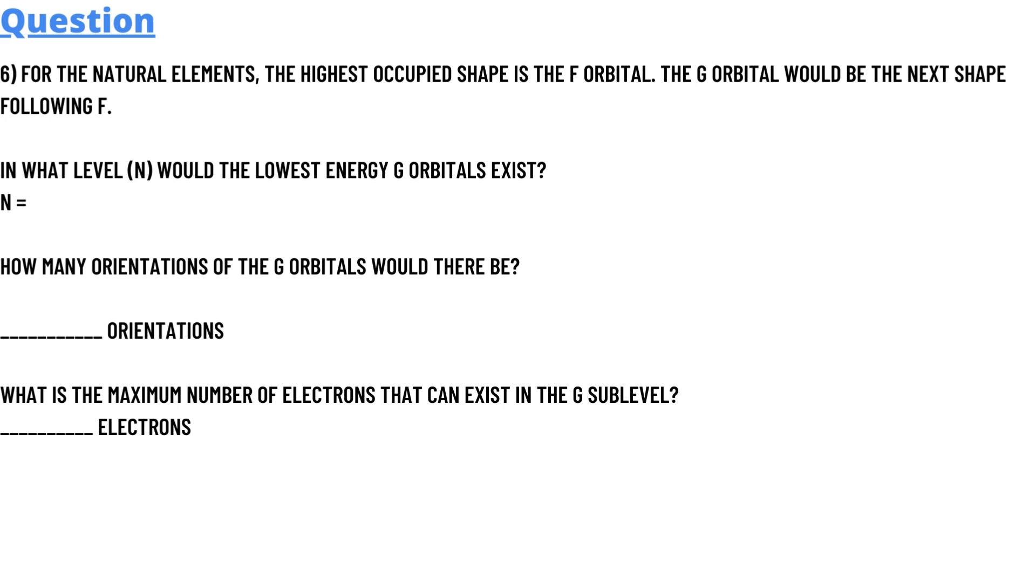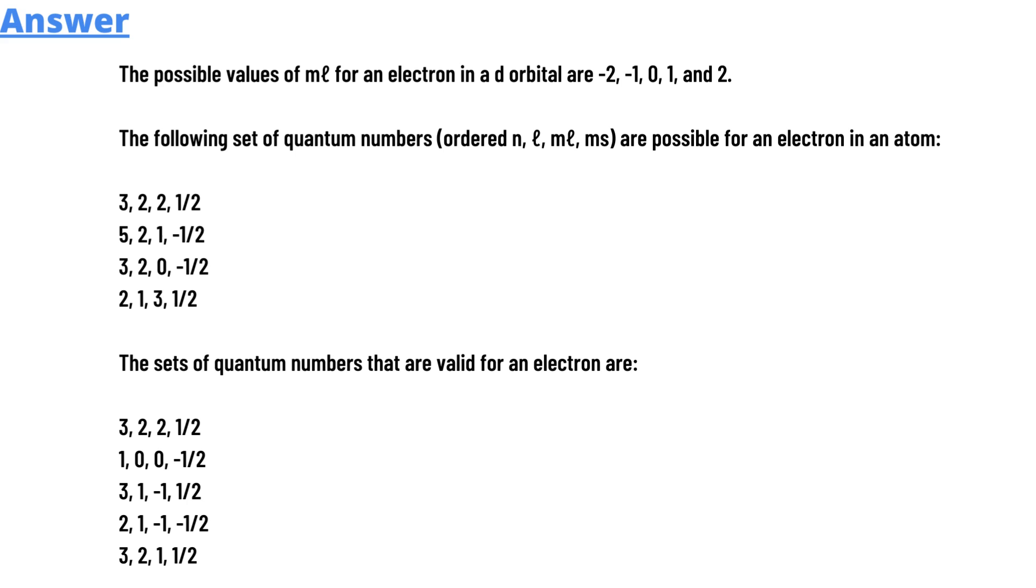The correct answers to the questions: The only possible value of m_l for an electron in an s orbital is zero. The possible values of m_l for an electron in a d orbital are -2, -1, 0, 1, and 2.